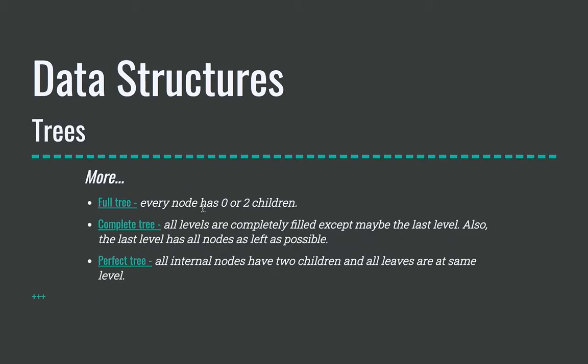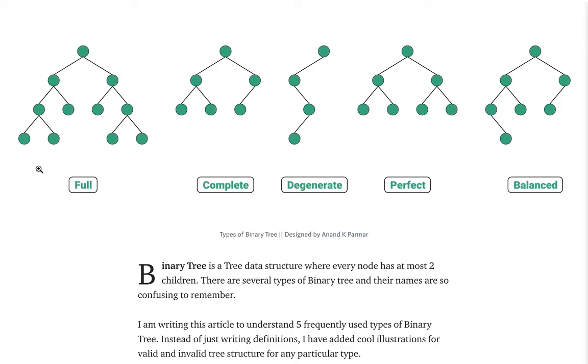So there are a couple of different types of binary trees in terms of like classifying them. The first one we'll look at is a full tree. A full tree means that every node has zero or two children. So let's look here. This is the full tree. You'll notice that right here, this node has zero children, and this node has two children. This node has two children. This node has two children. So every node in a full tree has either zero or two children. That's a full tree.